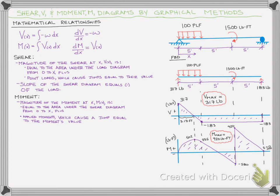By the same token, if you have an applied moment, that doesn't have an area under it either, and that's going to cause a jump on the moment diagram. So if you want the moment at any point X, you just sum up all the areas under the shear diagram to that point plus any applied moments in that range of X.